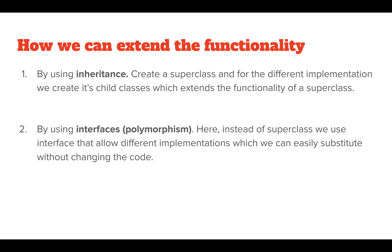We can extend functionality in two ways. The first is by using inheritance — we create a superclass and for different implementations we create child classes which extend the functionality of the superclass. The second is by using interfaces and polymorphism, where instead of a superclass we use an interface that allows different implementations which we can substitute at runtime without changing the code.